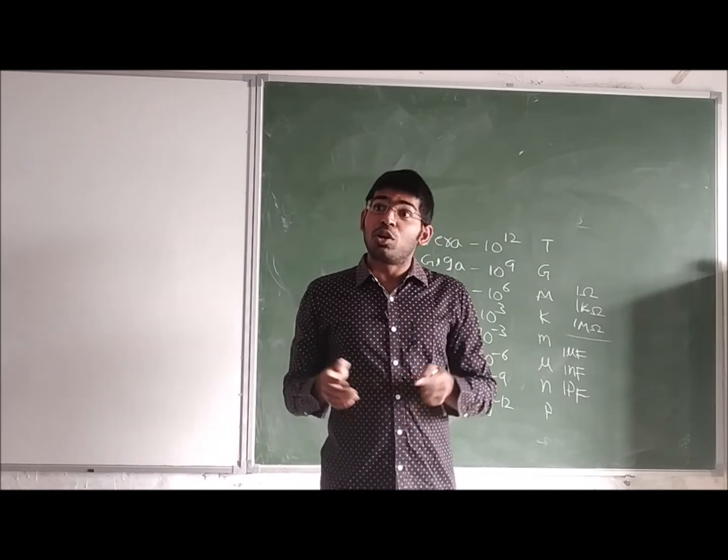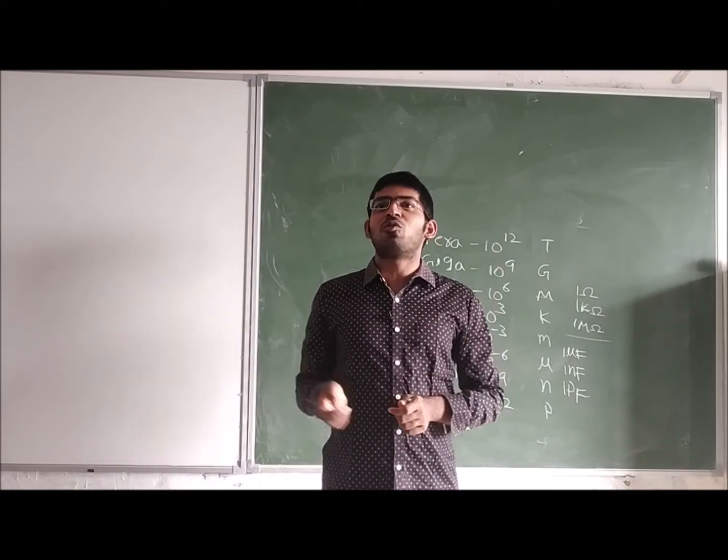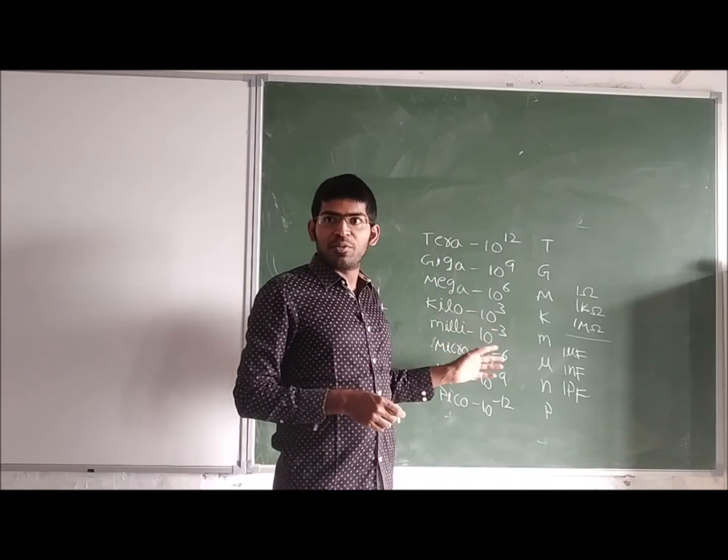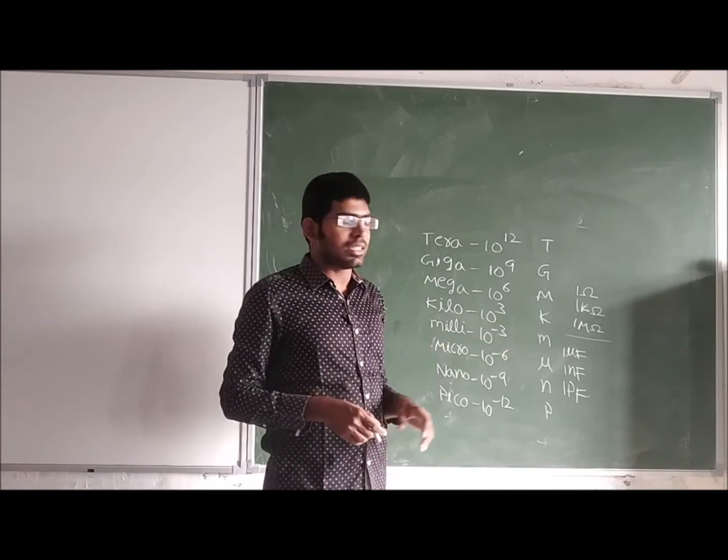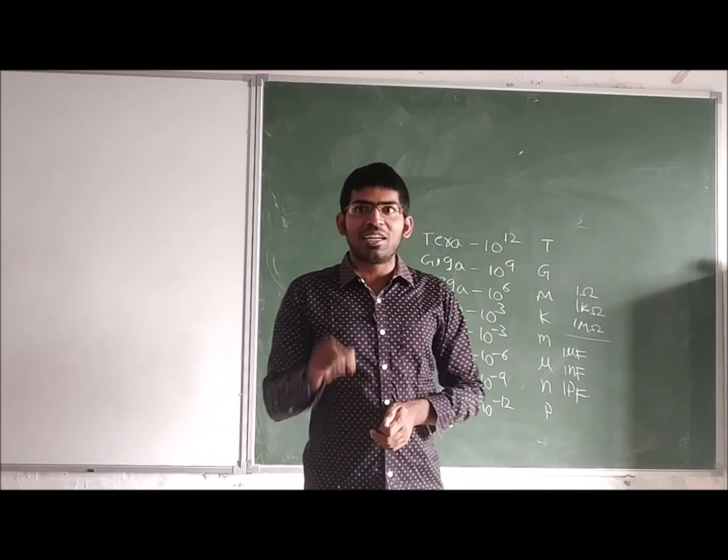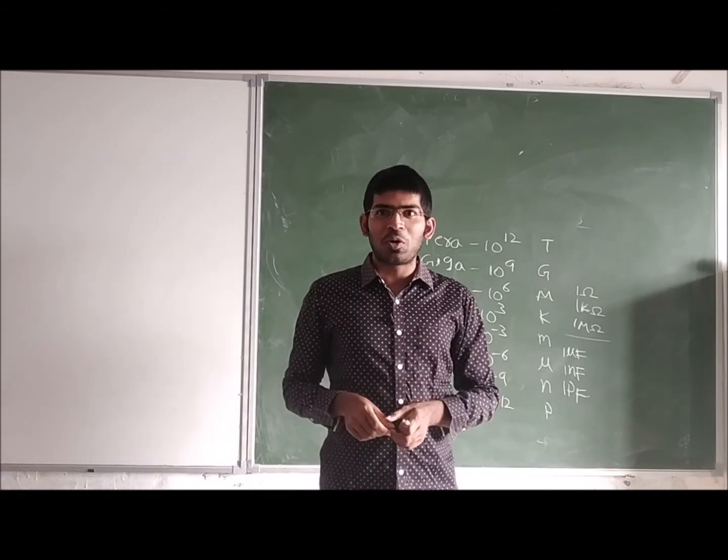25,000 volts—a huge amount of voltage. These are necessary for us. Whenever we are discussing anything, when we say 1 mega ohm resistance, you should understand it is 10 to the power 6 ohms.